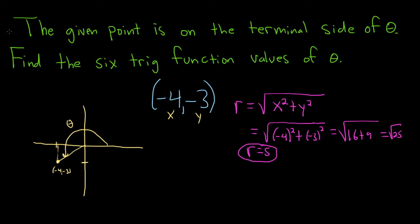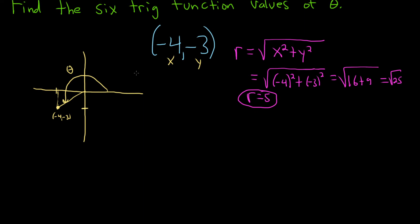Once we have r, we can use the other formulas for the trig functions to get all of the answers. The sine of theta is going to be equal to y over r. So here y is given to us, so it's simply negative 3 over 5. That's one of the answers to the question.